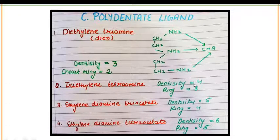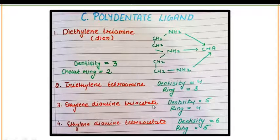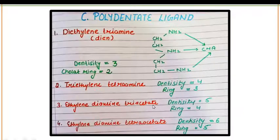The next example is ethylenediaminetriacetate — there are five donor atoms, diamine triacetate, and four rings are present. This is all about the polydentate ligand.